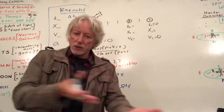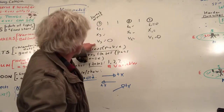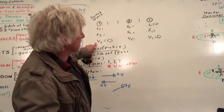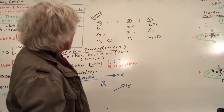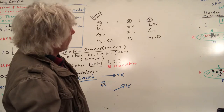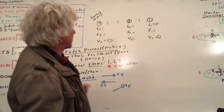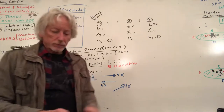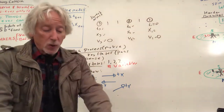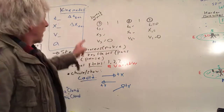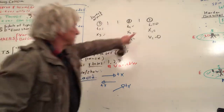There's also acceleration — we'll leave that for now. I can choose my coordinate system any way I want, I've got key states one, two, three, and I've labeled the variables with subscripts.